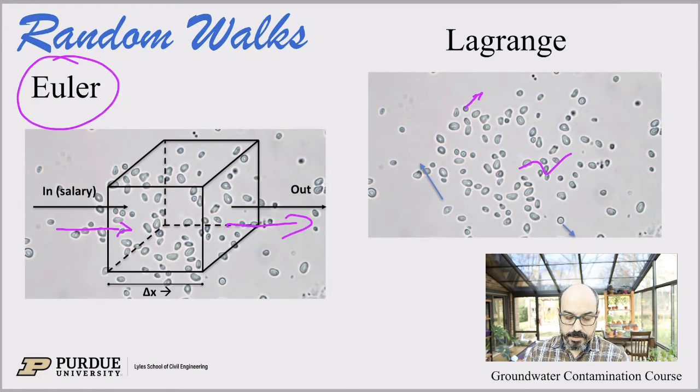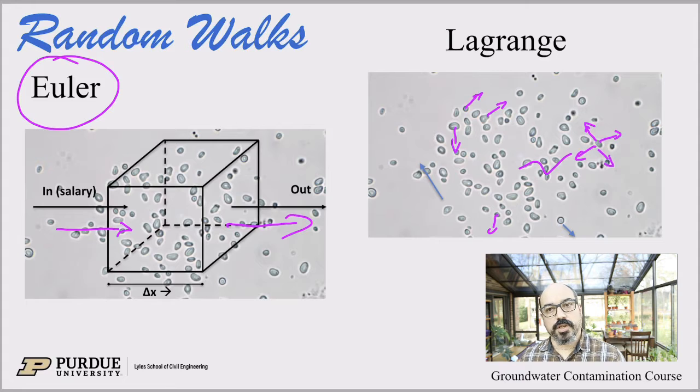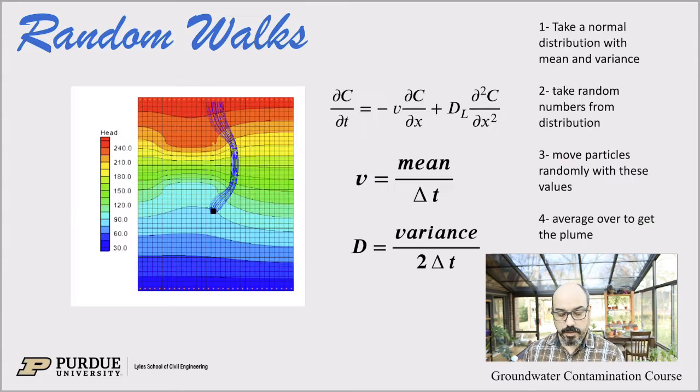Here we're looking at Lagrangian derivations. Essentially all these particles here, these are pollen grains, but they move randomly in space by agitation, because of heat or at the molecular level because of heat and random movement. If we analyze the randomness or if we average over a lot of particles, the way they move, then we can find the upscale transport parameters. That's what those particle tracking methods are for.